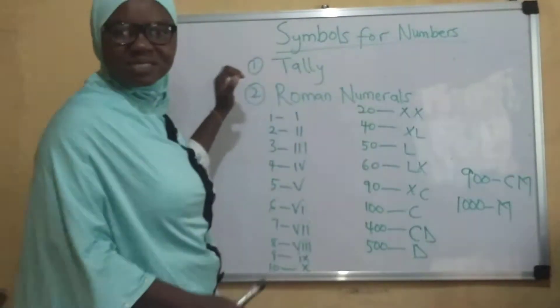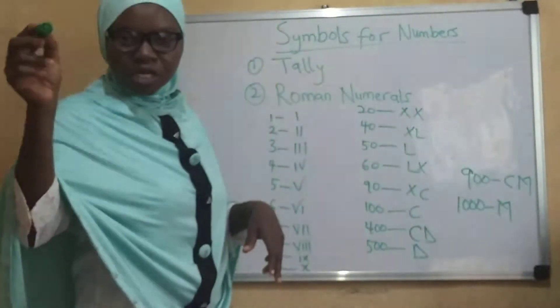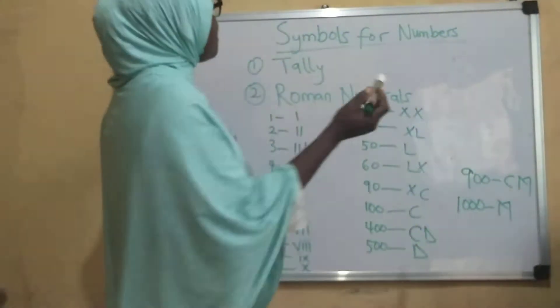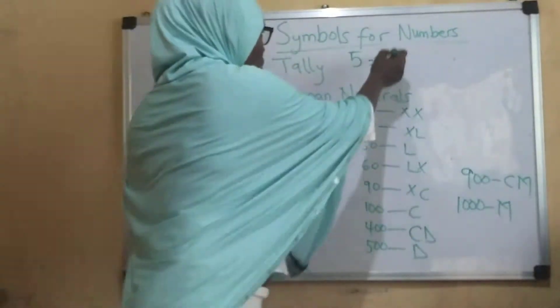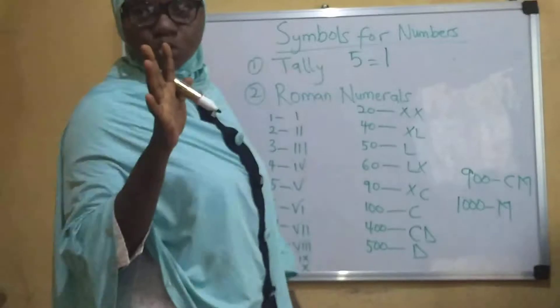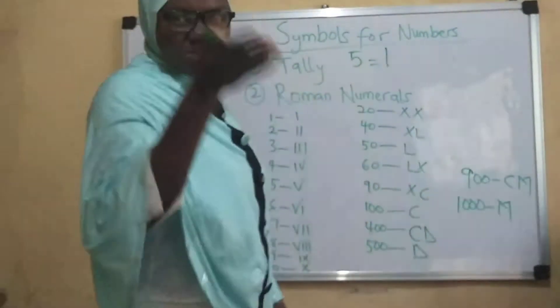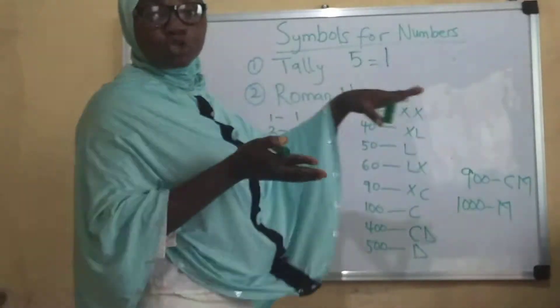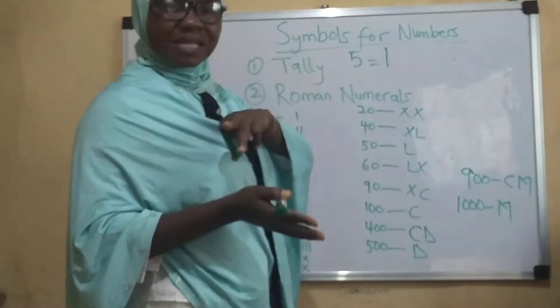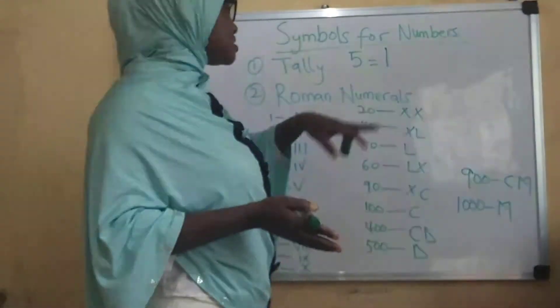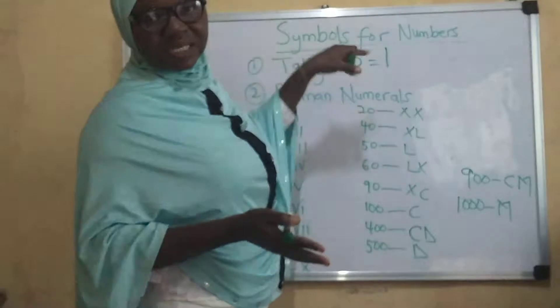One of the ones we want to look at is the tally. The tally is basically using strokes to represent numbers. On the 5th stroke, I'm going to use the 5th stroke to cross the 4 strokes that I have already. Let me show you how to use tally to represent numbers.